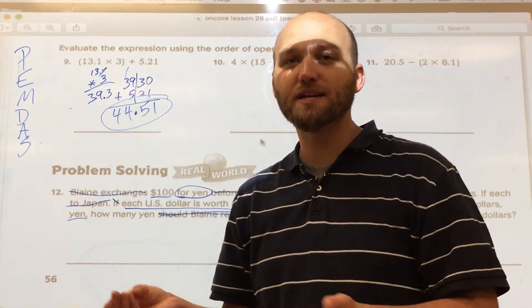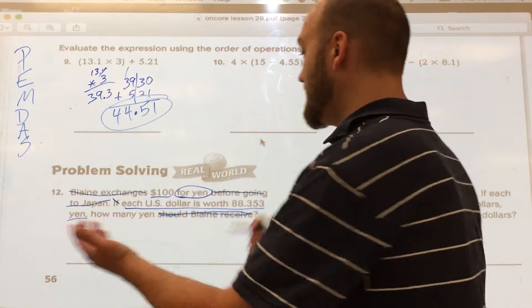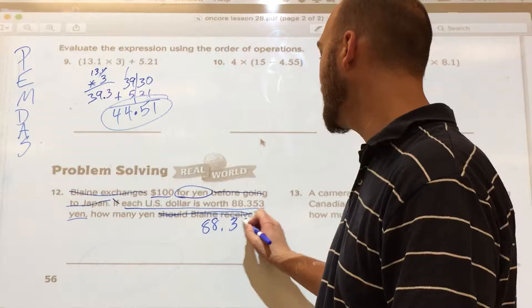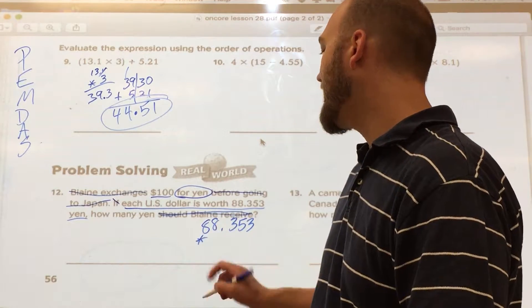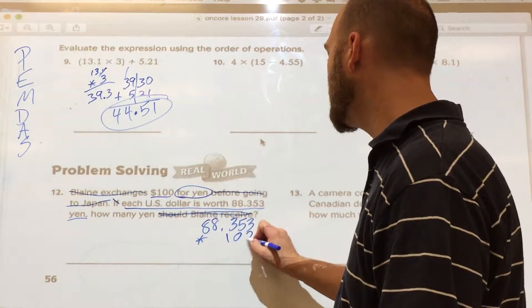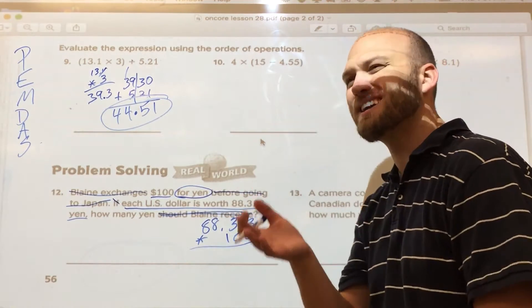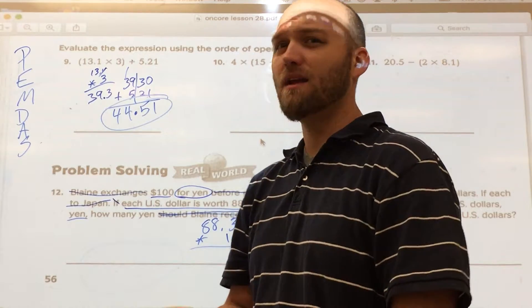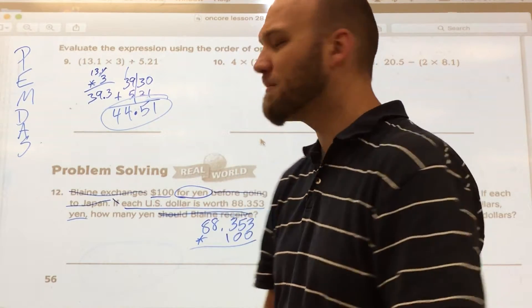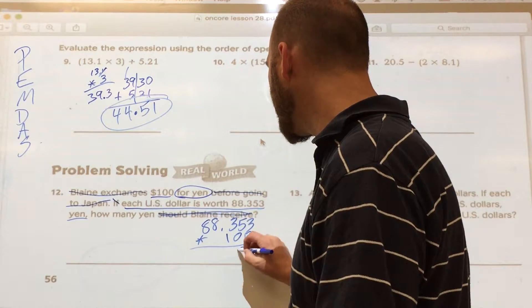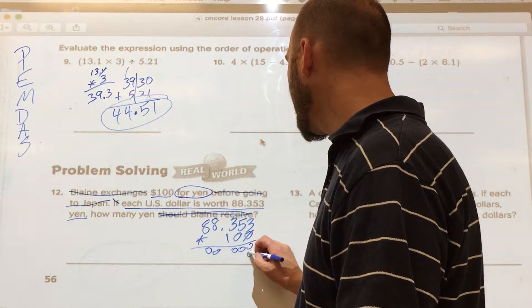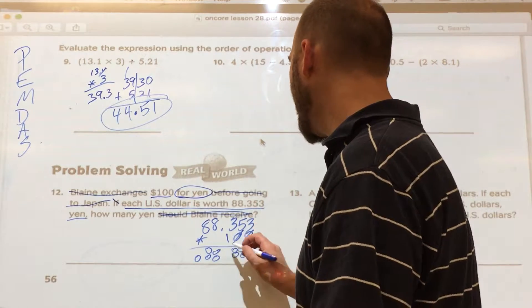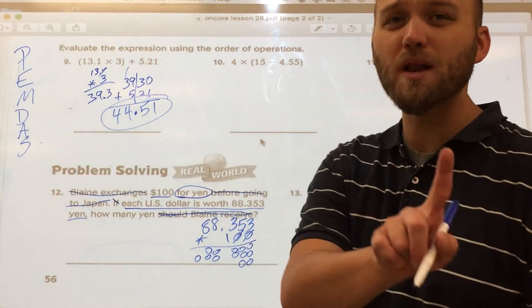Well, how many yen, anybody who's traveling internationally knows that this happens. How many yen is he going to get? Well, $1 gives me 88.353 yen. And how many dollars am I giving them? I'm giving them $100. Now, a lot of us could look at that and say, oh, I can do that in my head. So now we know we're changing international currency using decimals in our head. But a lot of us could do that because we're multiplying by 100. I'm going to write it out anyway. I know that I have my two zeros for placeholders. Because I'm not multiplying by 1, I'm multiplying by 100. So I have my two zeros for placeholders.